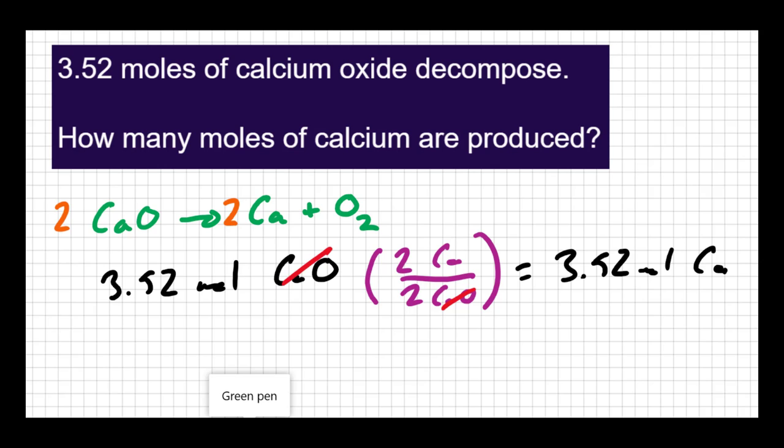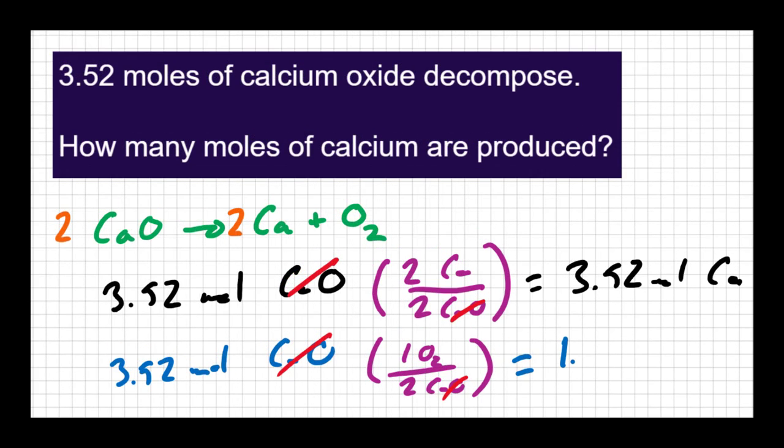The question doesn't ask it, but we could go on and do the same thing with oxygen. We could say if I have 3.52 moles of calcium oxide, then what's the ratio of my oxygen? I have one mole of oxygen produced for every two moles of calcium oxide. So I could put 1 O₂ for every 2 CaO. And again, I can cancel out the CaO, which is 1.76 moles of oxygen. Now, it might seem strange I'm making more moles of products than moles of reactants, but that's okay. There's no such thing as conservation of moles. There's just conservation of mass. And if you looked at your balanced equation, that should make sense. I'm starting with two moles of reactants and ending with three moles of products. So I should have more product than I do reactants.